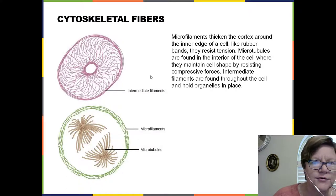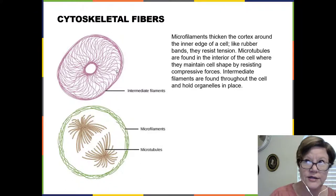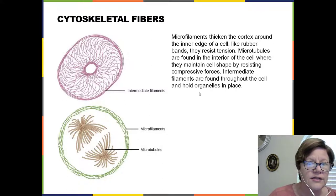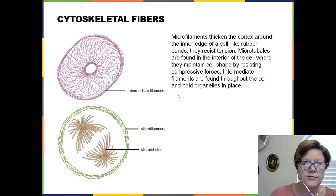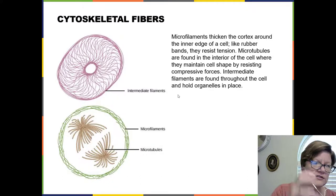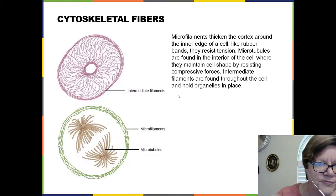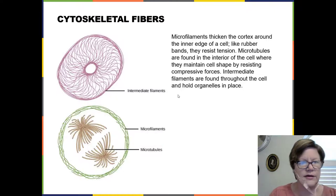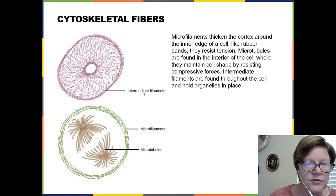There are three types of fibers: microfilaments, microtubules, and intermediate filaments. The microfilaments are the thinnest of the cytoskeletal fibers. The microtubules are the thickest, although these things are all very small. And the intermediate filaments, as you can guess, are intermediate in diameter. We're talking about the diameter of the fiber, not the length. You have these fibers all throughout the cell.